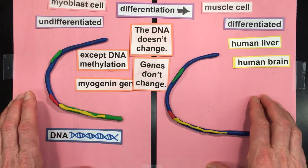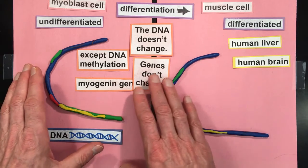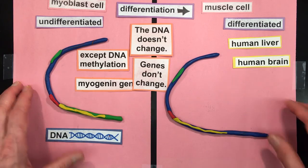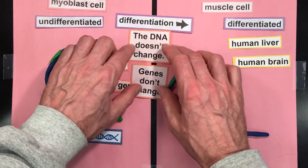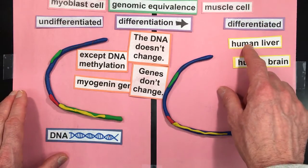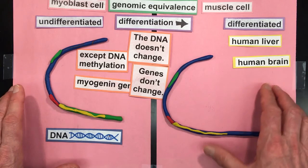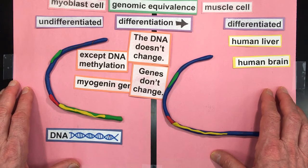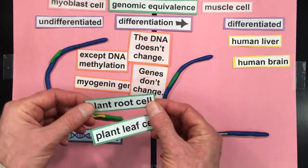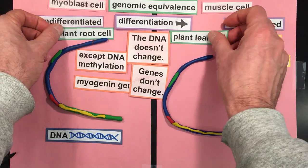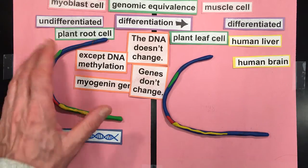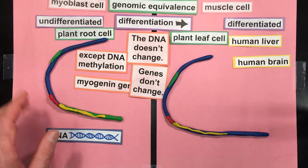All the cells — with very rare exceptions — have all the genes needed to make the whole organism. That concept is called genomic equivalence, and it means each cell has the whole genome. Each muscle cell, each human brain cell, each human liver cell have the whole genome present. That's true for all animals and all plants as well. The plant root cell and the plant leaf cell have genomic equivalence — the plant root cell has all the genes to make a leaf, it's just not using all that information.